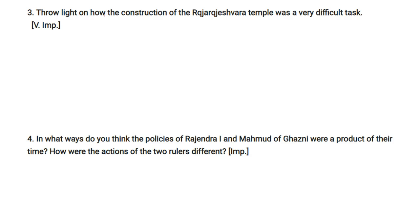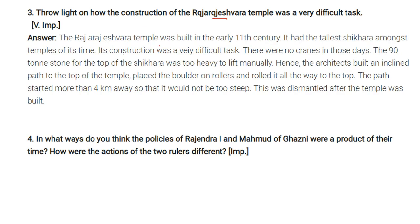Question: How was the construction of the Raja Rajeshwara temple a very difficult task? The Raja Rajeshwara temple was built in the early 11th century and had the tallest shikara amongst the temples of its time. There were no cranes in those days, so the 90-tonne stone for the top of the shikara was too heavy to lift manually. The architects built an inclined path to the top of the temple, placed the boulder on rollers, and rolled it all the way to the top. The path started more than 4 km away so that it would not be too steep.